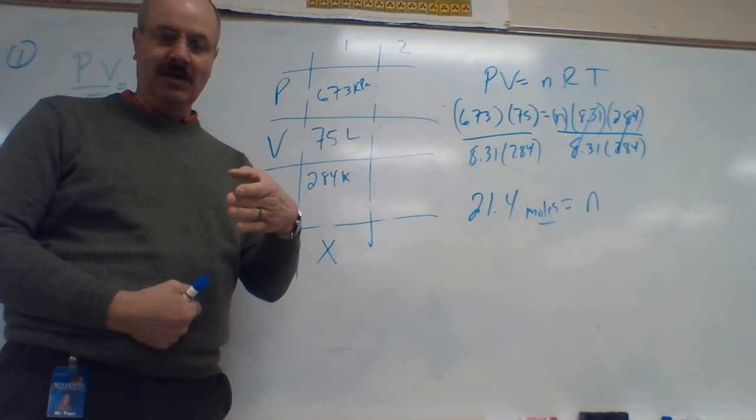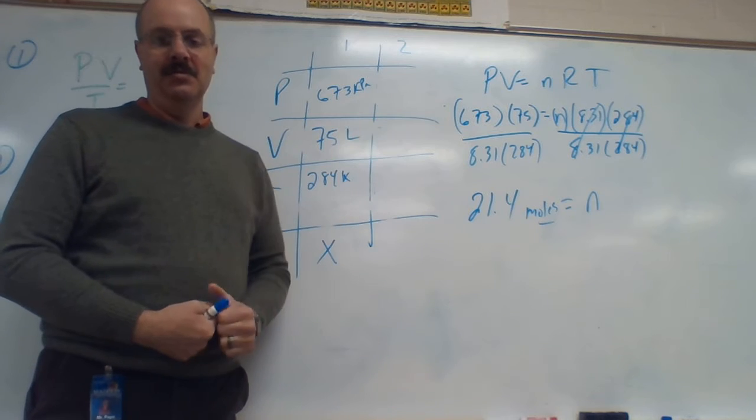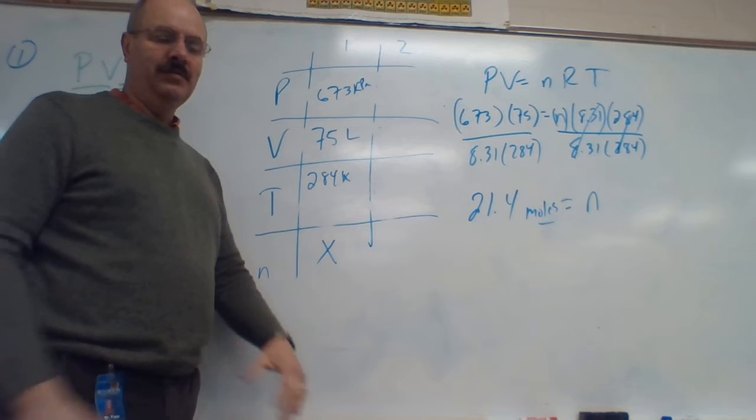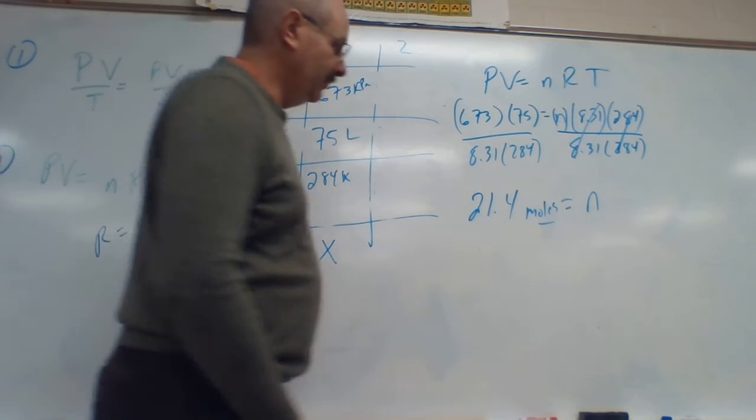Instead of being a dozen, which is 12, a mole is 6.02 times 10 to the 23rd. That's what a mole is. You don't have to worry about that. It's not going to be in the test for this test. But that's what a mole is.